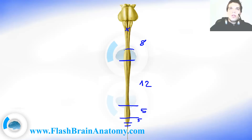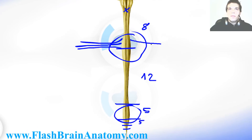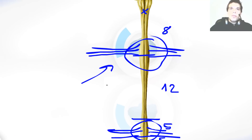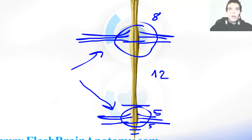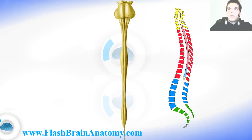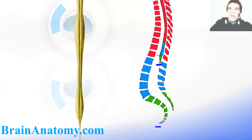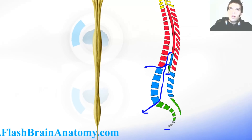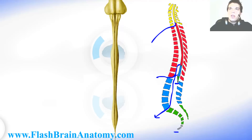You probably noticed two enlargements on the spinal cord. Those enlargements exist because at these locations a large number of spinal nerves leave for the extremities. At the cervical enlargement, they leave for the upper extremities, and at the lumbar enlargement they leave for the lower extremities. The spinal cord is shorter than the vertebral column, so the lumbar spinal nerves exit the spinal cord higher up but then travel down to exit the vertebral column lower. The medullary cone should reach the level of the second lumbar vertebra.